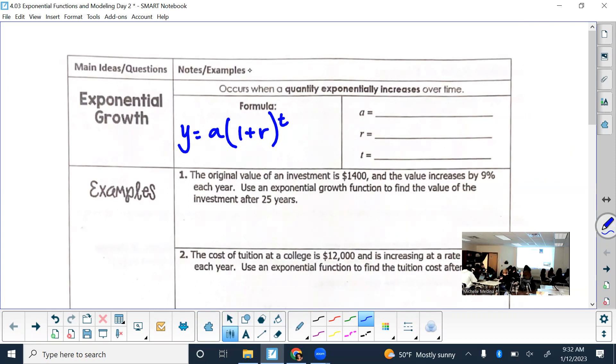What did A stand for? The initial amount or starting amount, a constant. And then what does the R represent? Growth rate. Special thing about the growth rate, it has to be written as a decimal. If it gives you it as a percent, make sure you convert it to a decimal before putting it in your problem.